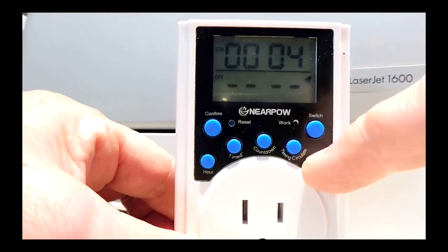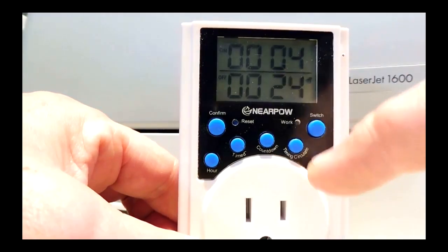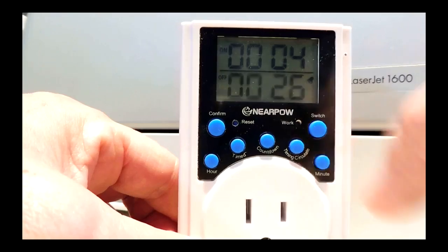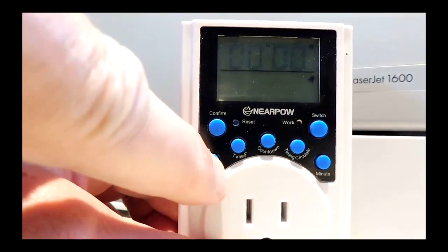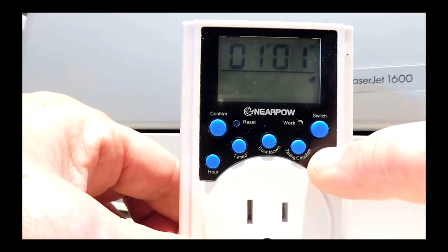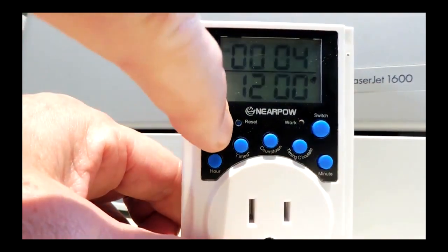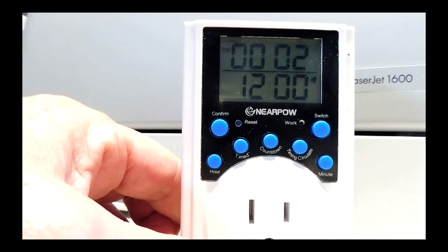Then push and hold the minute button until 26 is shown and push timing recirculate again. Then push the hour button and then the minute button. Then push confirm. This will start the timer cycle.